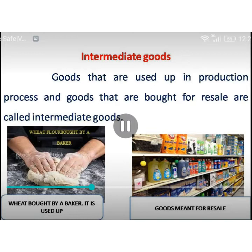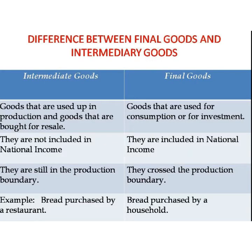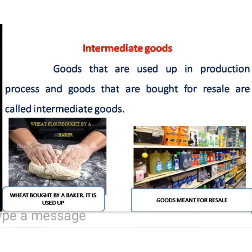The difference between final goods and intermediate goods: Final goods are those used for consumption or investment — they are included in national income and cross the production boundary, for example, bread purchased by a household. Intermediate goods are those used up in production or bought for resale — they are not included in national income and remain within the production boundary, for example, bread purchased by a restaurant or wheat bought by a baker.